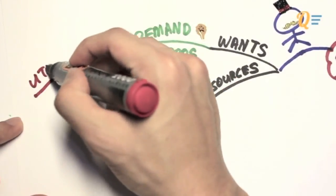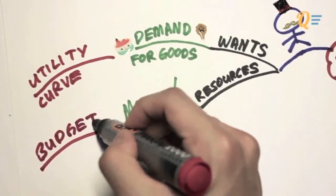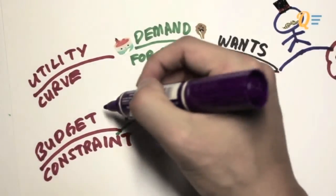A consumer's preference is represented by what we call the utility curve. And the money is basically a budget which constrains them from achieving more utility from consumption of goods.